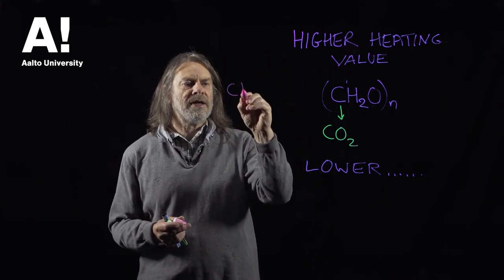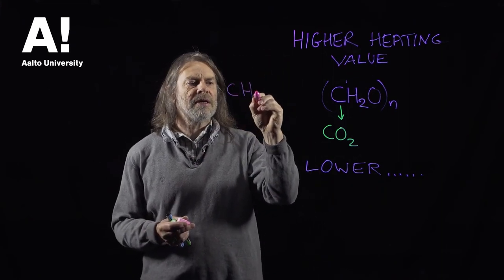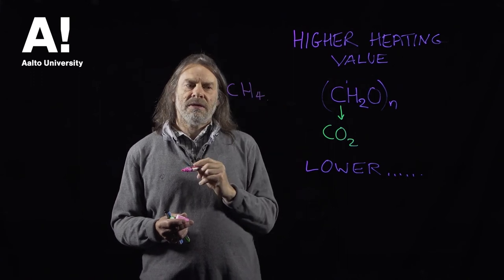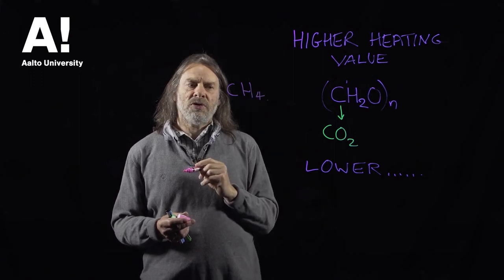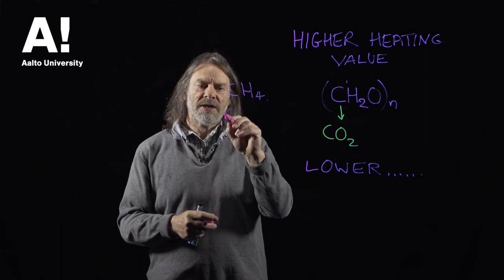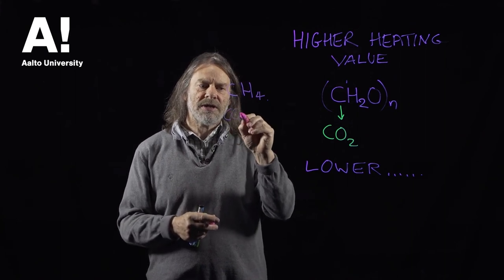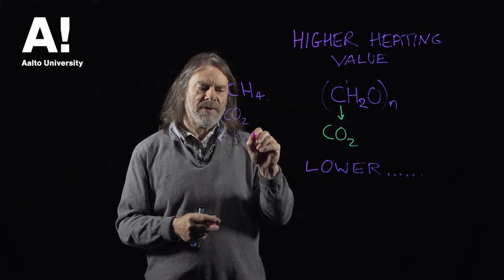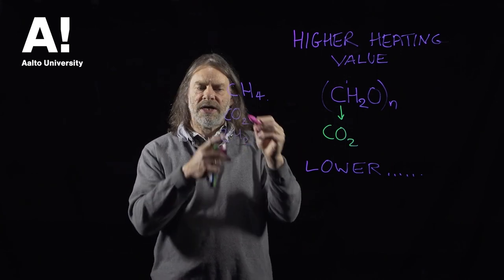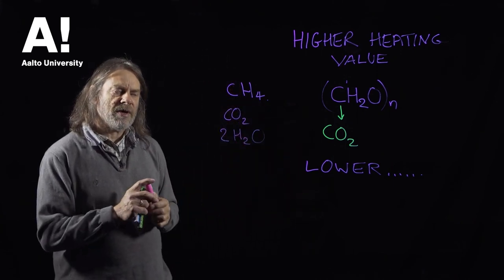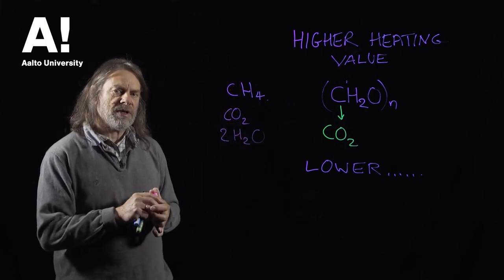So the lower heating value of methane will be whatever energy is used to make the carbon dioxide, minus the energy for the two water molecules that are going to be evaporated — that amount is subtracted from the energy produced by forming carbon dioxide.